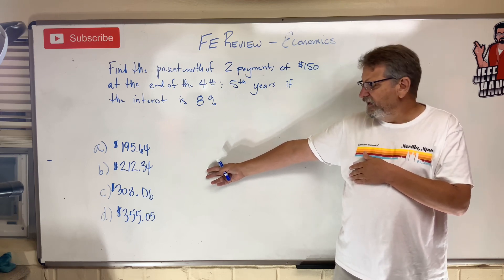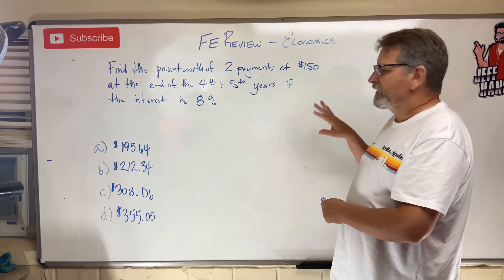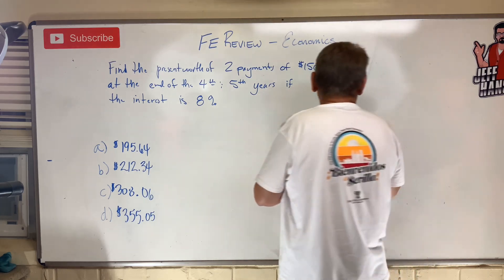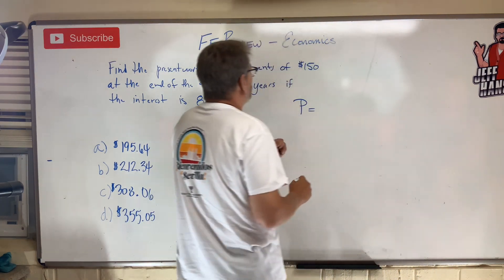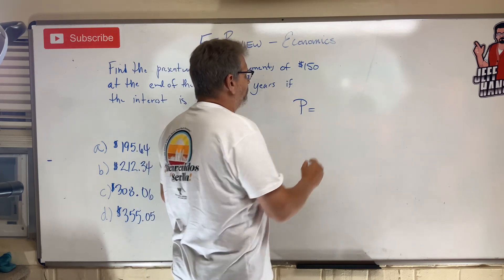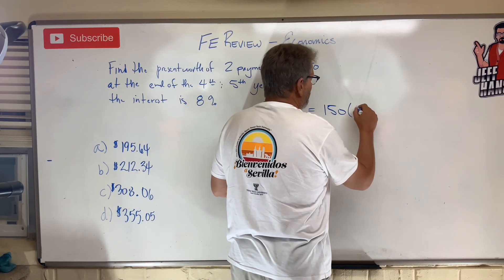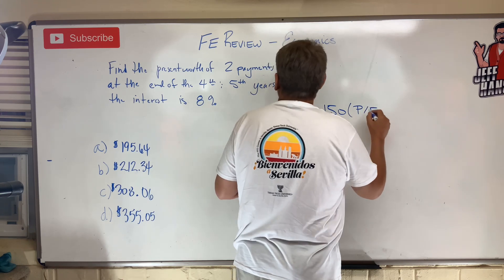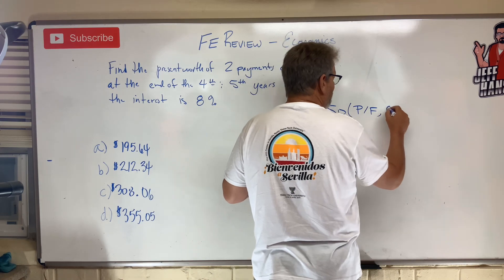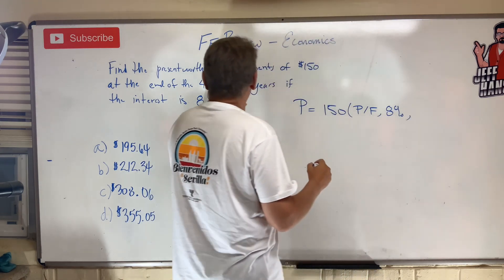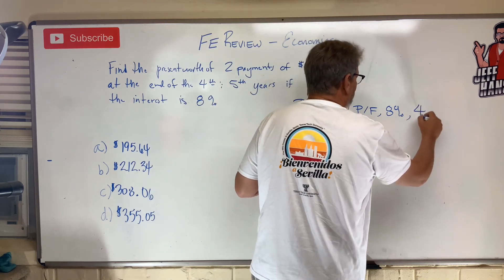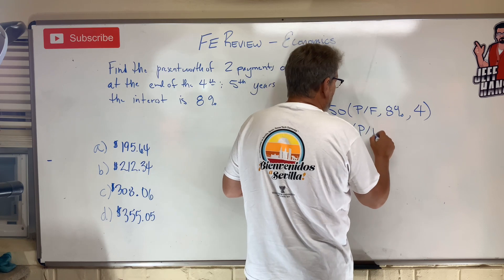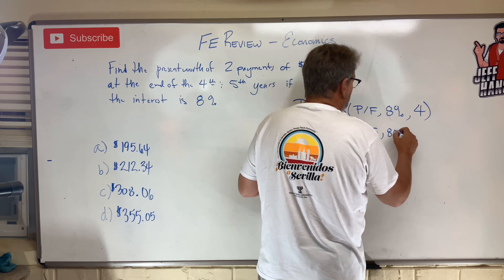Alright, here we go. We've got a future value and we need to move it back to a present value. The present value equals 150 times (P/F, 8%, 4) — one payment is four years out — plus 150 times (P/F, 8%, 5) for the payment five years out.